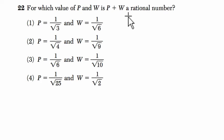Alright, for which value of P and W is P plus W a rational number? So a rational number, if you remember, is a number that can be written as the ratio of two integers. So A divided by B, where A and B are integers.